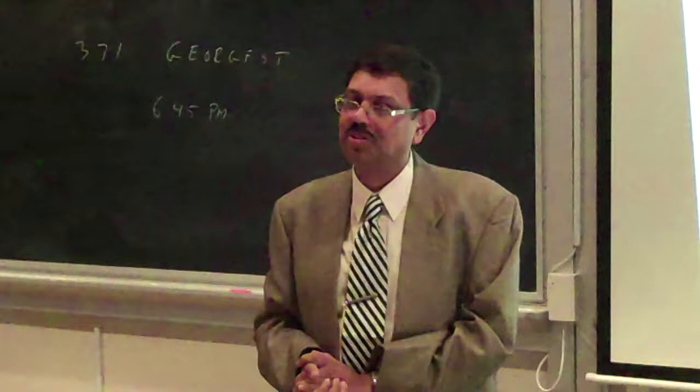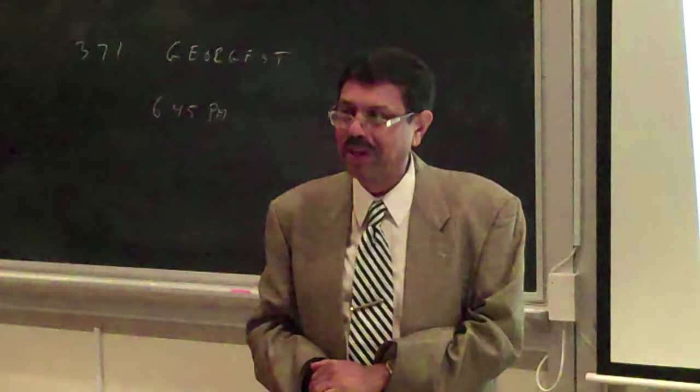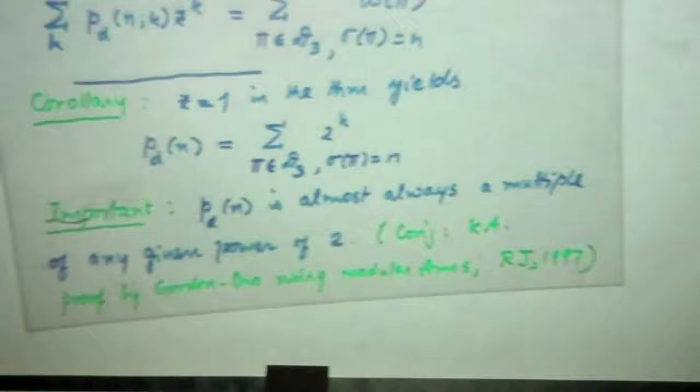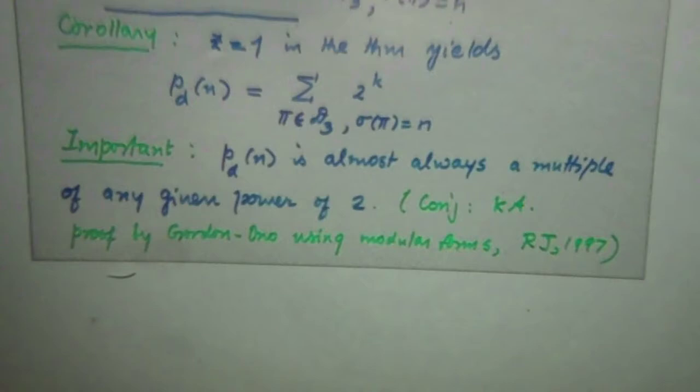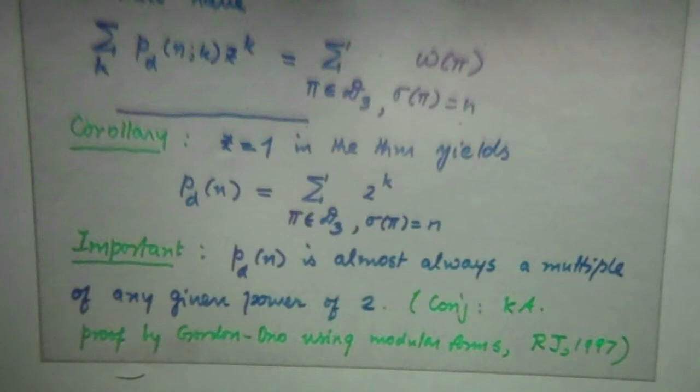Professor Basil Gordon said yes, he thought that could be proved using the theory of modular forms. And I said: I have a 2-adic identity which will explain it — this identity combinatorially explains it in some sense. You can use this identity to prove that result for small powers of k, but if you want to do it for all powers, you need the theory of modular forms. Basil Gordon and Ken Ono proved this, and it appeared in the first issue of the Ramanujan Journal in 1997. The combinatorics led to this statement about partitions into distinct parts — this is really extending Euler by introducing this parameter.